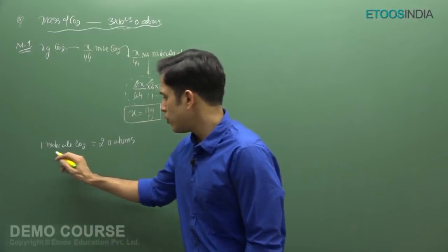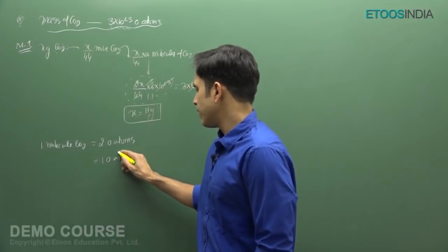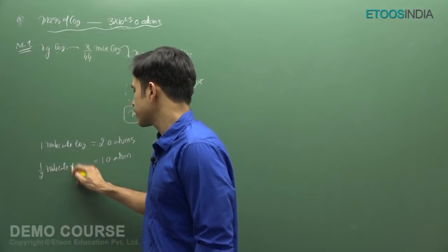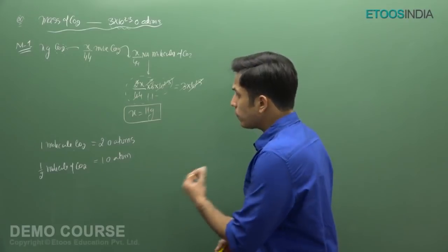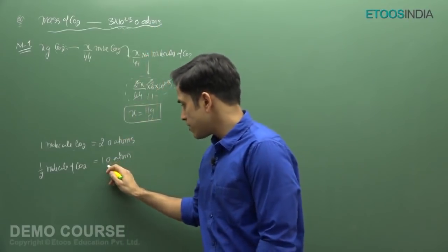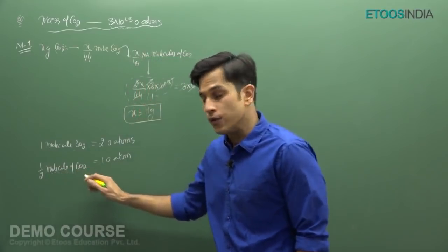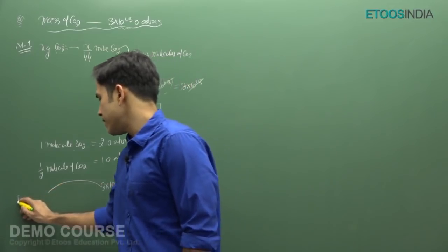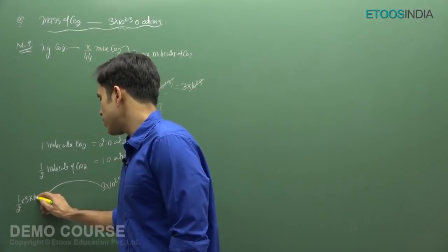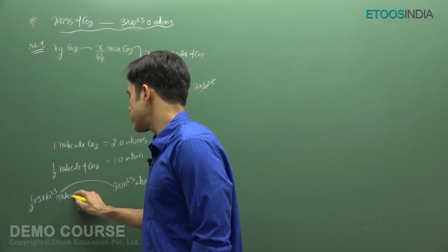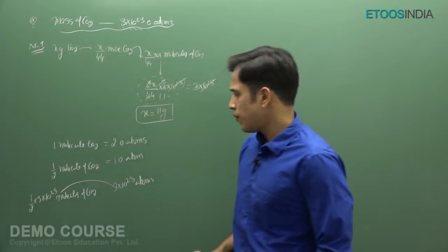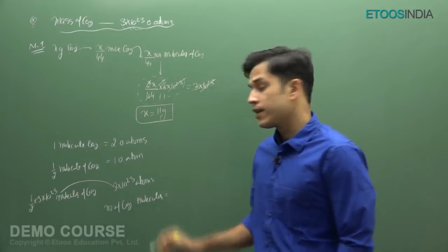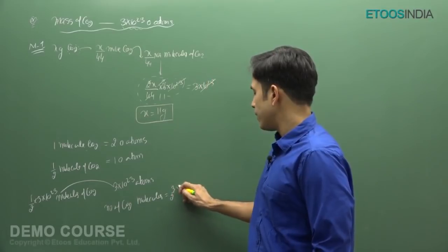You have two oxygen atoms in one molecule of CO2, so one oxygen atom is present in half a molecule of CO2. You have 3 into 10 to the power 23 oxygen atoms. If one oxygen atom is in half a molecule of CO2, then 3 into 10 to the power 23 atoms will be present in — the number of CO2 molecules will be 3 by 2 into 10 to the power 23.